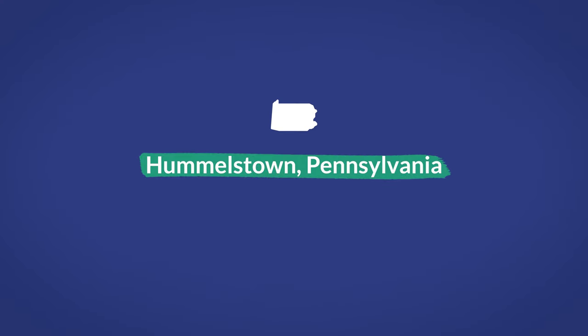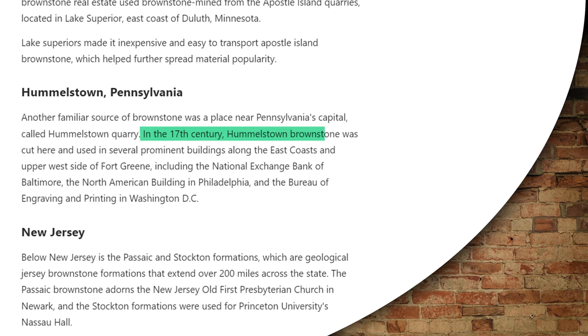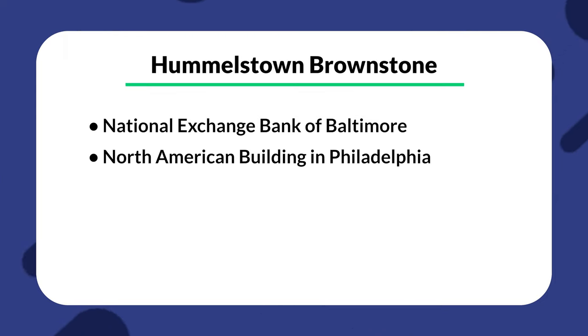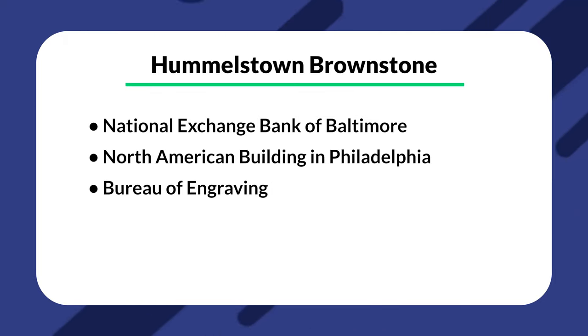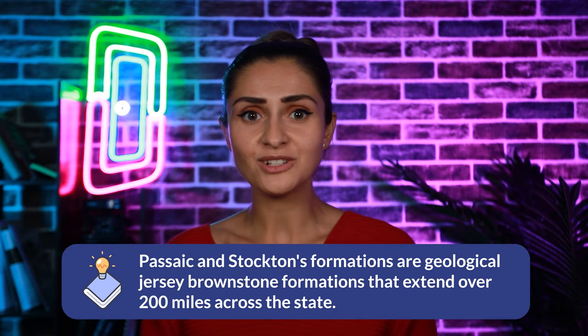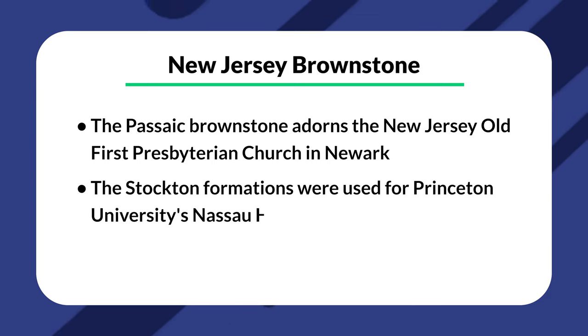Hummelstown, Pennsylvania. Another familiar source of brownstone was a place near Pennsylvania's capital called Hummelstown quarry. In the 17th century, Hummelstown brownstone was cut there and used in several prominent buildings along the east coast, including the National Exchange Bank of Baltimore, the North American Building in Philadelphia, and the Bureau of Engraving and Printing in Washington, D.C. New Jersey also has the Passaic and Stockton formations, geological brownstone formations that extend over 200 miles across the state. The Passaic brownstone adorns the New Jersey Old First Presbyterian Church, and the Stockton formations were used for Princeton University's Nassau Hall.